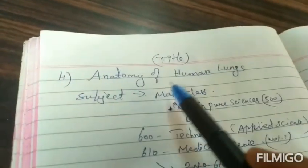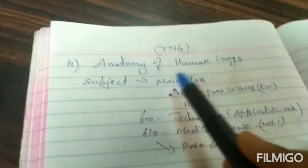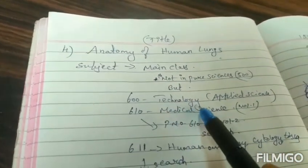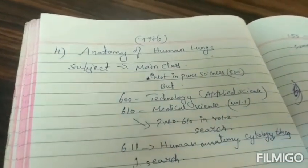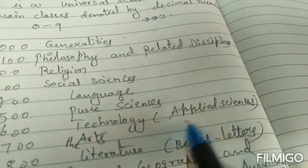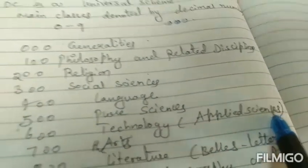This will be our class number. One more example I will tell you: anatomy of human lungs. Where can you find it? In technology you can find the main class 600. If you have doubt, then you can just go ahead and check. 600 is technology, where it is written as applied sciences.